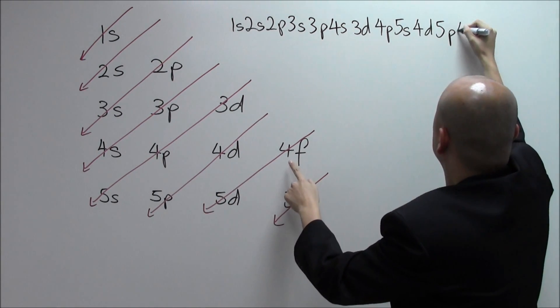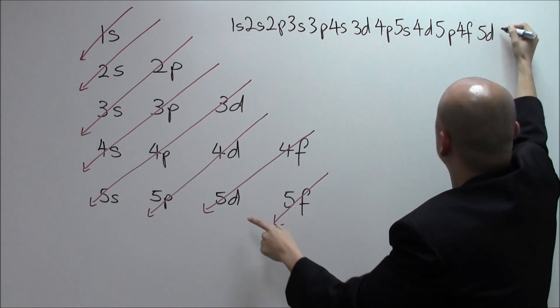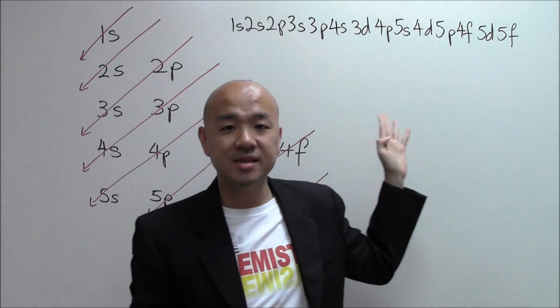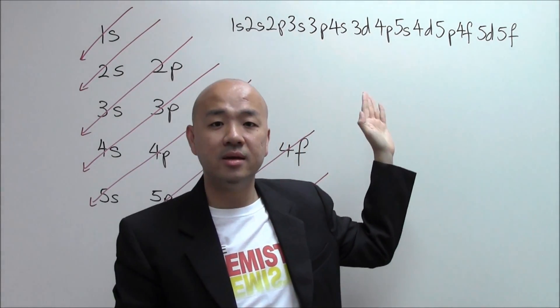5p, and the last three: 4f, 5d, and 5f, there it goes. This is the correct order of filling the orbitals.